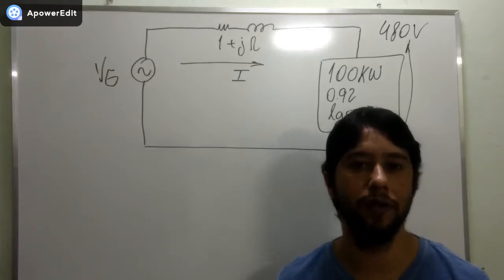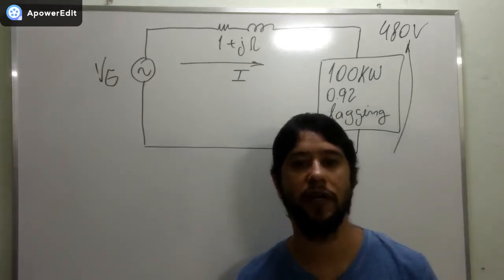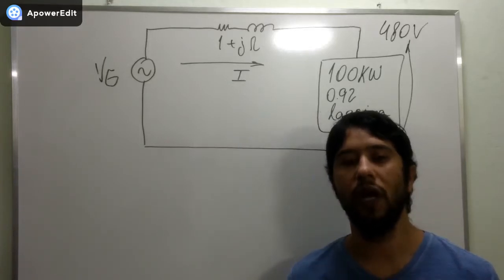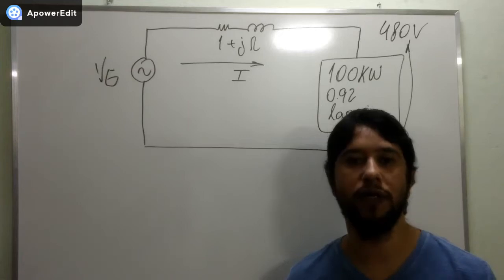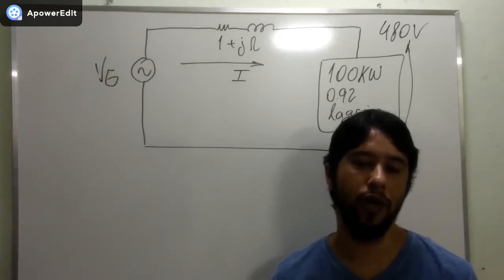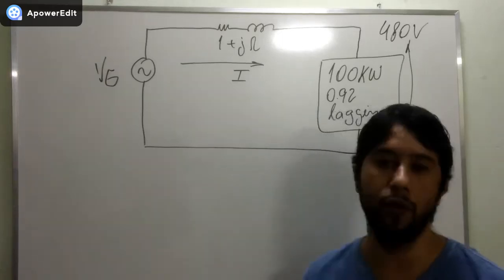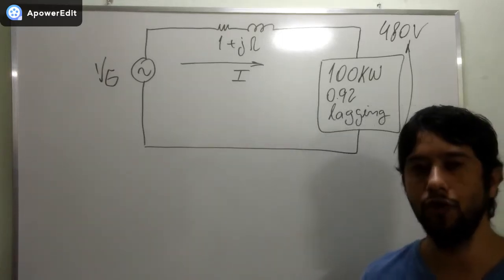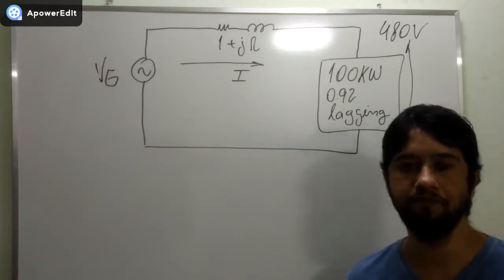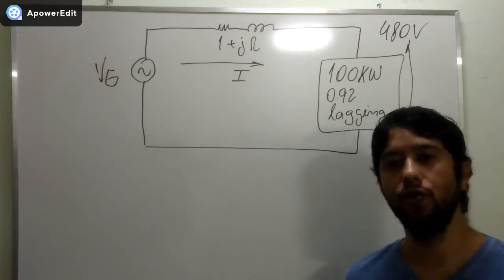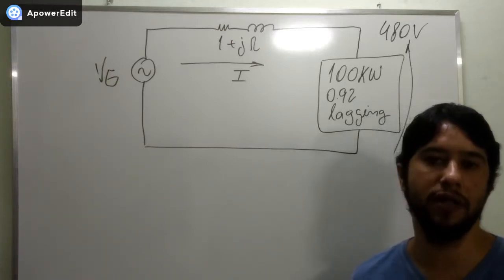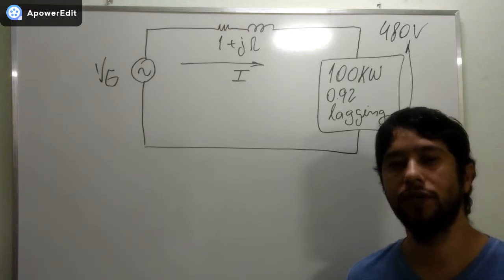The objective of this exercise is to demonstrate the power that we can save through the use of transformers. We are going to see in this example that the power lost in transmission without the use of a transformer is a thousand times greater than the power lost in cables when we use transformers.